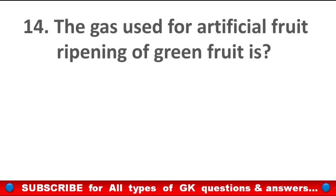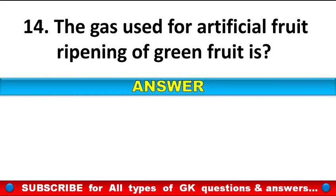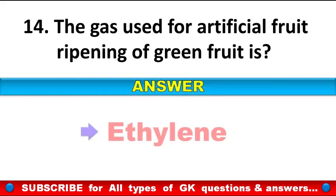The gas used for artificial ripening of green fruit is? Answer: Ethylene.